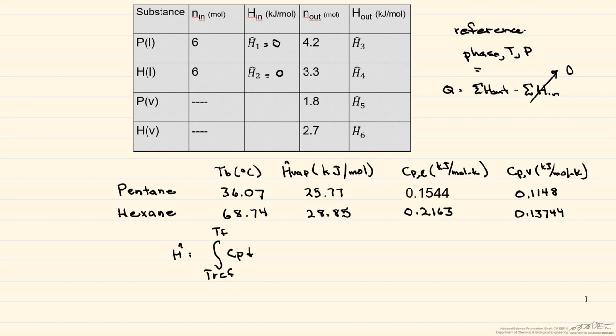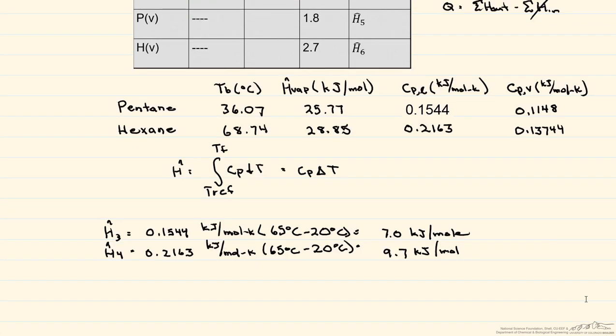Now, since each one of our heat capacities is one term, this ends up being that it's equal to our C sub P, and then that's delta T. So let's calculate the two of them. Note that we use the heat capacities of the liquid, because H3 and H4 are liquid enthalpies, and 65 degrees C, our final temperature, is what that substance ends up at when it leaves the unit, and 20 degrees C is our reference. So now we have H3 and H4.